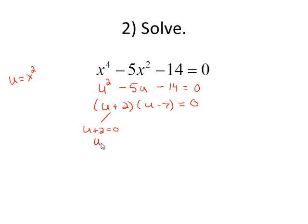This factors to be u plus 2 times u minus 7 equal to 0. Our first solution is u equals negative 2. Our second solution, by adding 7, we find that u is equal to 7. Now let's reverse the substitution by putting in x squared for u. So x squared equals negative 2 or x squared equals 7.